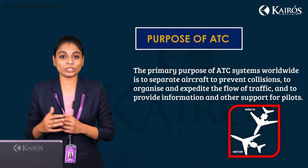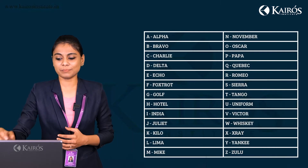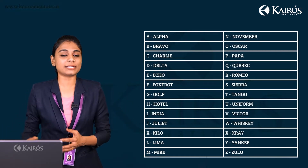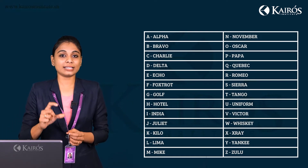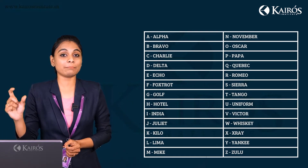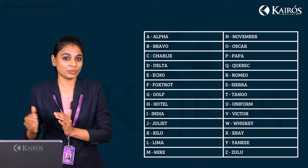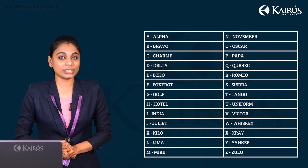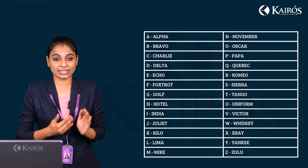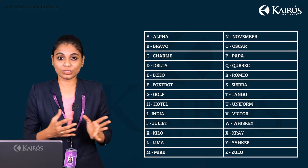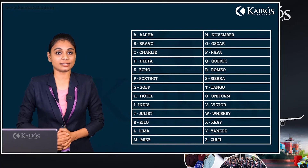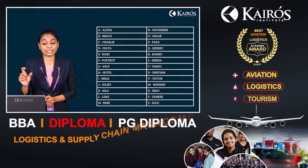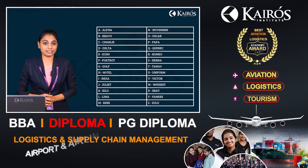Let's see what these phonetic words are. It's very simple — it is the normal alphabets that we learn, but the only thing is you have to remember the word associated with each letter. Here on the screen you can see all 26 letters of the alphabet, and a phonetic code for each letter is given.